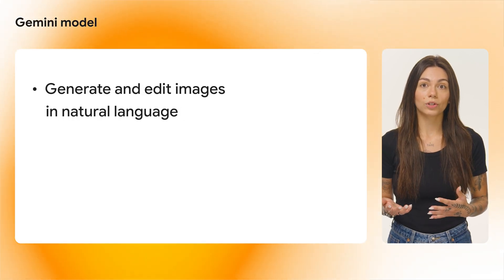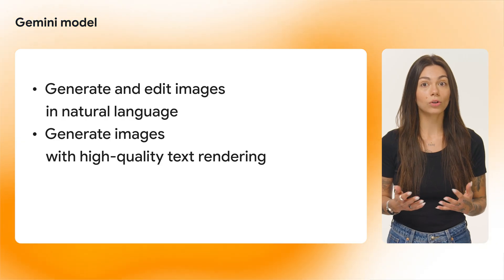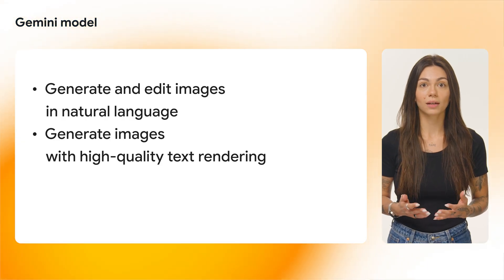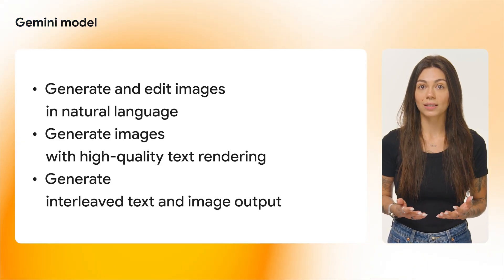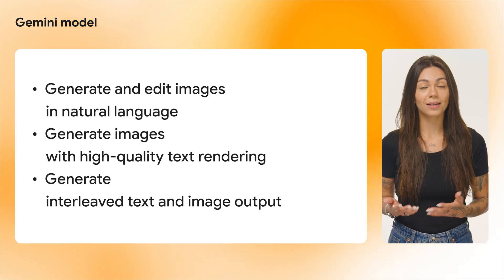There are two models that you can use to generate images: Gemini or Imagine. When using a Gemini model, you can ask the model to generate and edit images using either text only or text and image prompts. With this capability, you can do things like generate and edit images in natural language, generate images with high-quality text rendering including long strings of text, or generate interleaved text and image output — for example, generate a blog post with text and images.